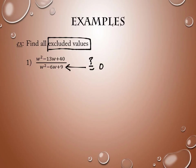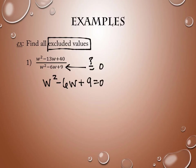So maybe it's w equals two, or maybe it's w equals five. The way that we find it is simply by setting the denominator equal to zero and solving. That denominator is, in fact, a quadratic. The numerator has nothing to do with it, by the way. Some of you get overzealous and want to set everything equal to zero, but the numerator has nothing to do with excluded values — it's just the denominator.